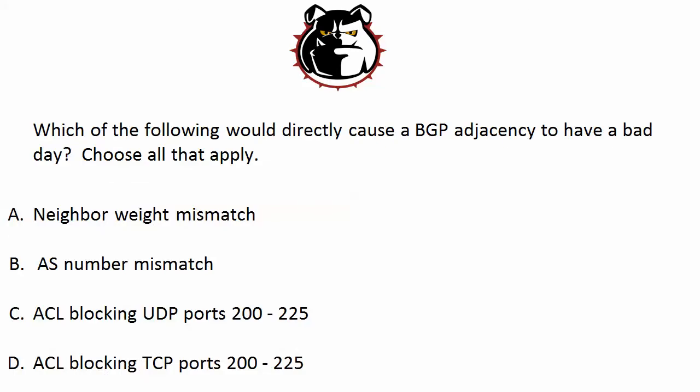Which of the following would directly cause a BGP adjacency to have a bad day? Choose all that apply. A: a neighbor weight mismatch. B: an AS number mismatch. C: an ACL blocking UDP ports 200 through 225. Or D: an ACL blocking TCP ports 200 through 225. As always, these are the dreaded choose-all-that-apply. I'll give you about seven more seconds — go ahead and pause the vid if you want to think about it.